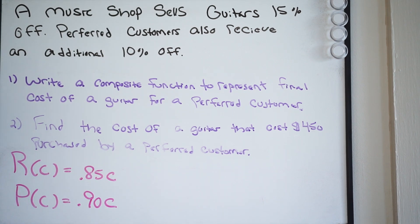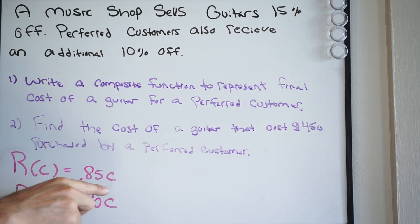And just so you understand how this is working, assume you came into the guitar shop and you bought a guitar and you were a preferred customer and the guitar cost $300. Well, you'd go to your regular customer cost and you would plug it in here.